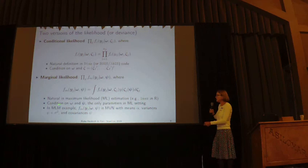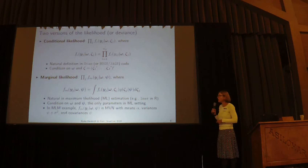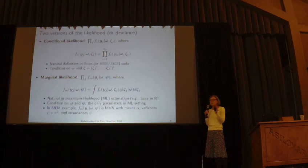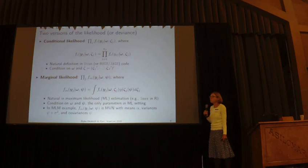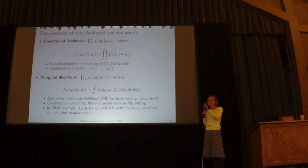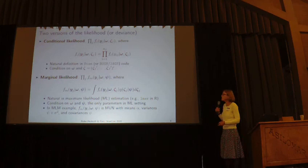In the random intercept example, the marginal distribution has a closed form. For one cluster — say students in a school — the joint probability of all responses is multivariate normal with mean alpha and variance psi plus sigma squared, with covariance psi. The correlation between any two students is the intraclass correlation: psi divided by psi plus sigma squared.